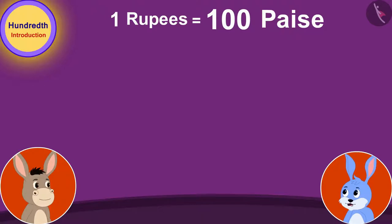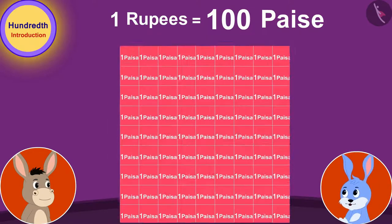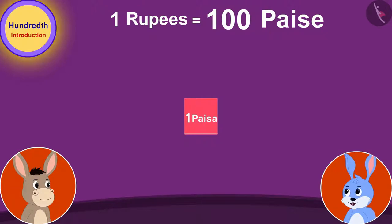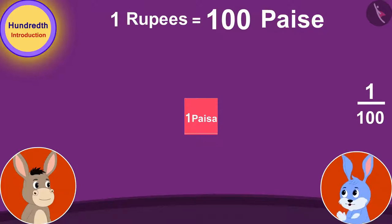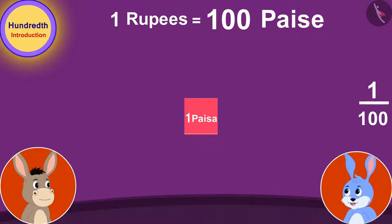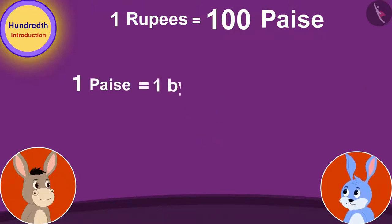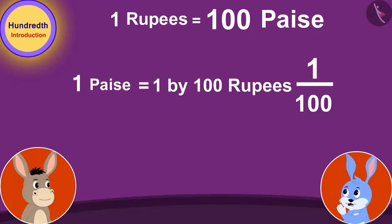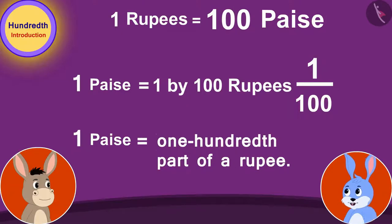Exactly. Suppose, if we represent 100 paise by making a hundred squares in this way, then 1 square would be equal to 1 paise. If we take one of these hundred squares, then we can write it in the form of a fraction as 1 by 100. Therefore, we can say that 1 paise is 1 by 100 or 1 hundredth part of a rupee.